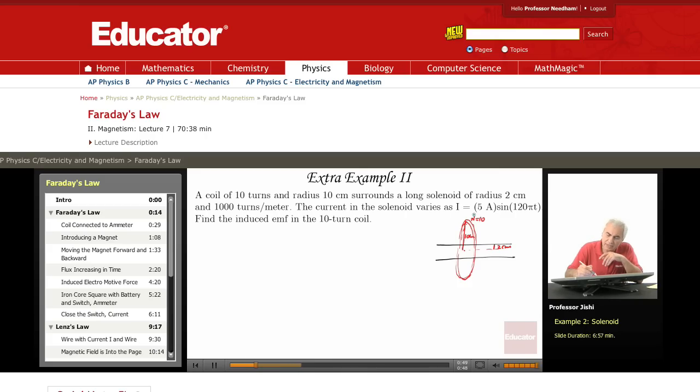The solenoid has n, little n, which is the number of turns per meter of 1,000 turns per meter. The current in the solenoid varies as 5 amperes sine 120πT. Find the induced EMF in the 10-turn coil.